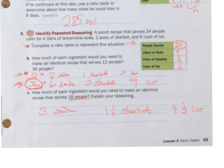If you have any questions let me know. If you're feeling good about this, go on to the extra practice on page 45, do numbers 12 through 16, rip it out, put your name on it, and turn it in.